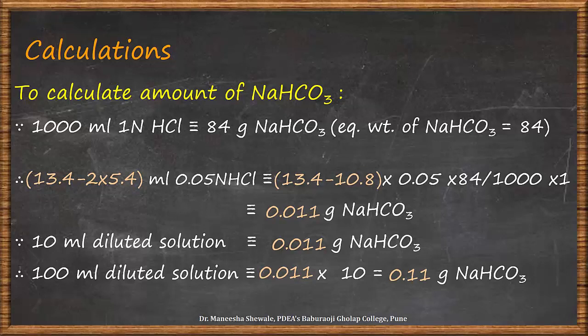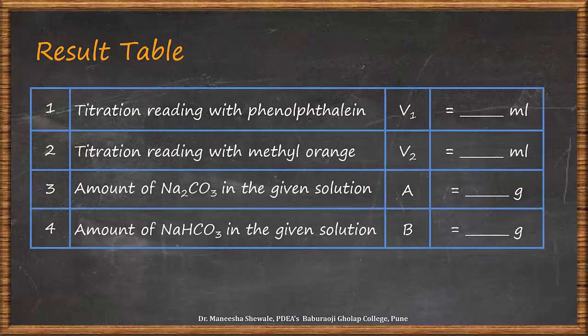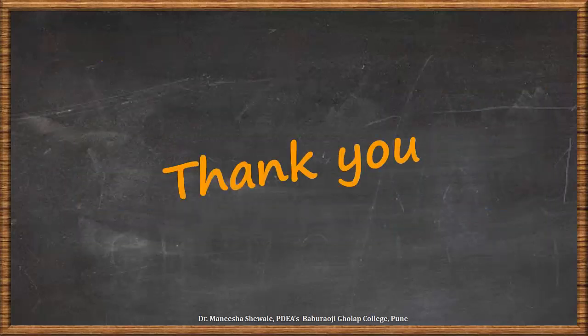Once we have both amounts, we prepare the result table. The titration reading with phenolphthalein indicator is V1 = 5.4 ml. The titration reading with methyl orange indicator is V2 = 13.4 ml. The amount of sodium carbonate in the given solution is 0.29 grams, and the amount of sodium hydrogen carbonate is 0.11 grams. We have now seen how to perform the experiment, note down the observations, carry out the calculations, and write the result table. Thank you for watching the video.